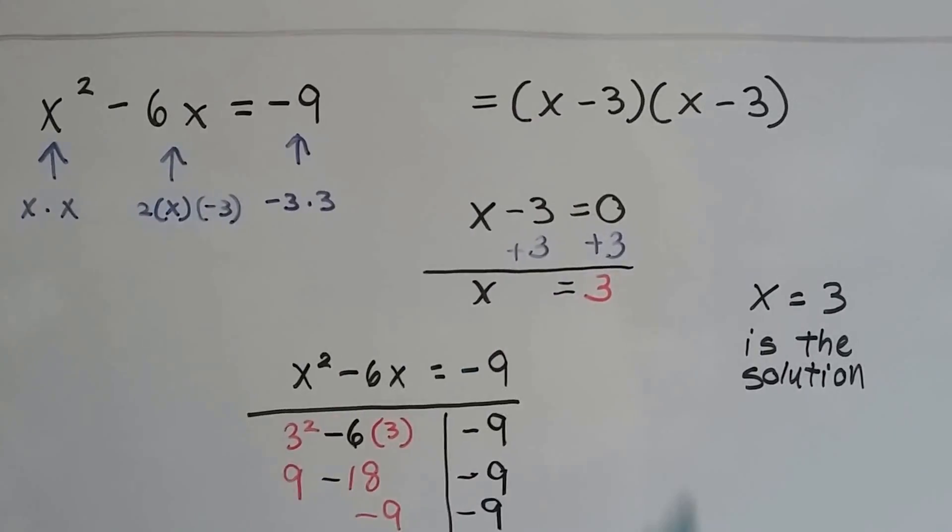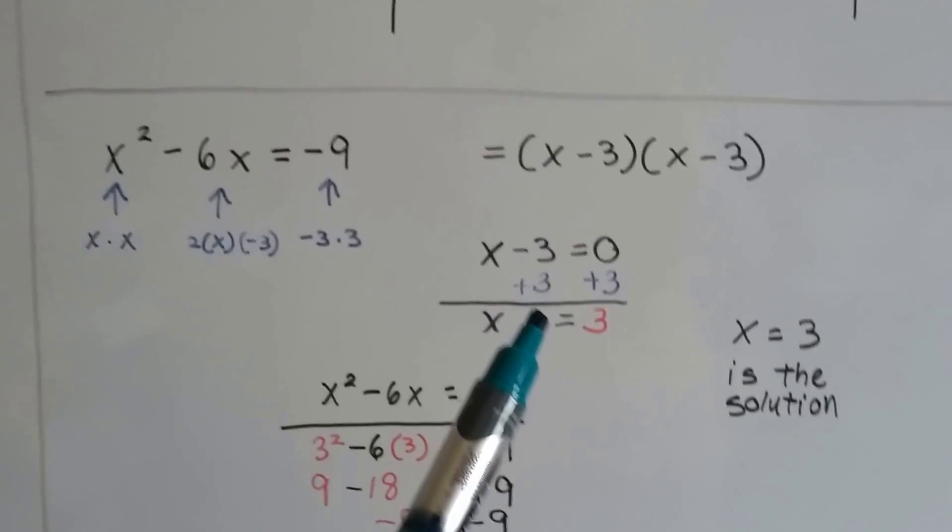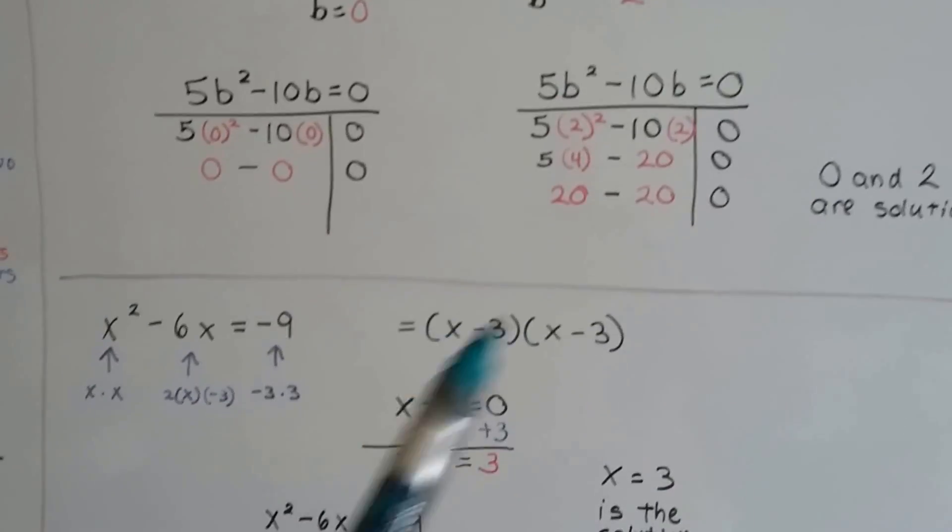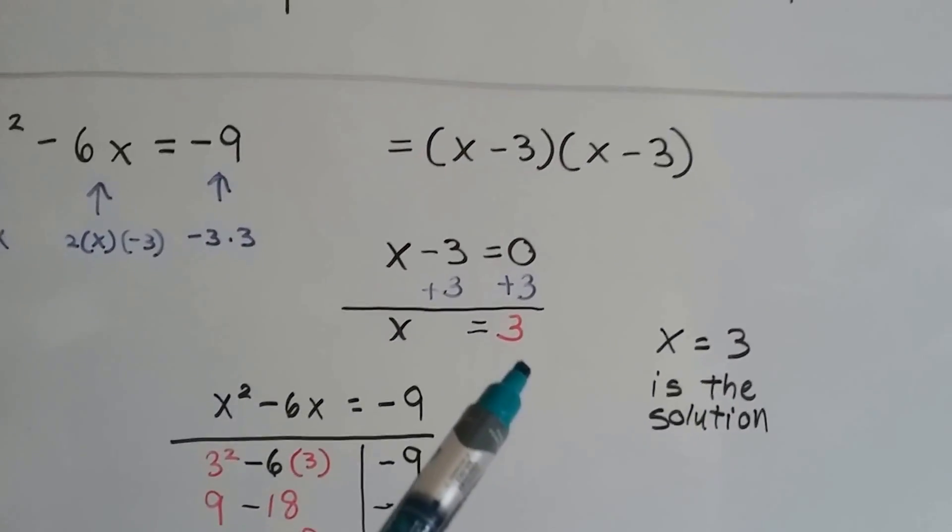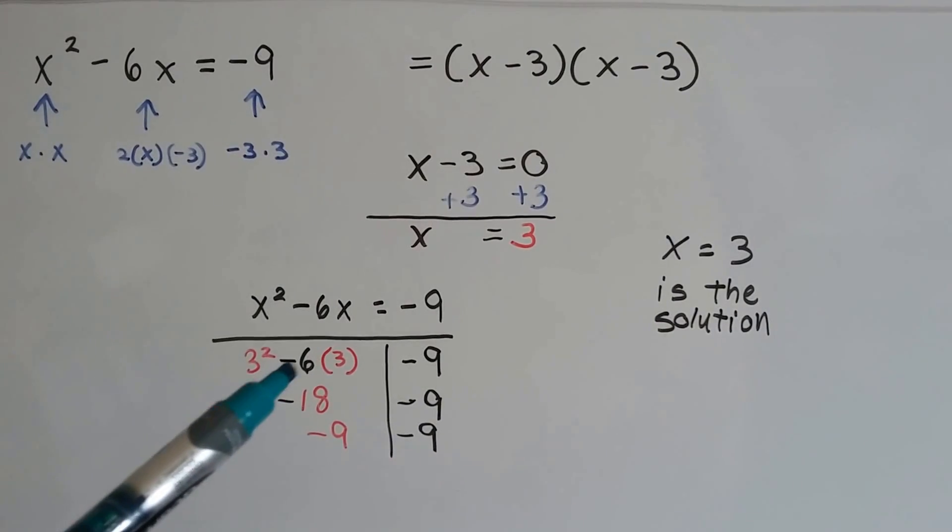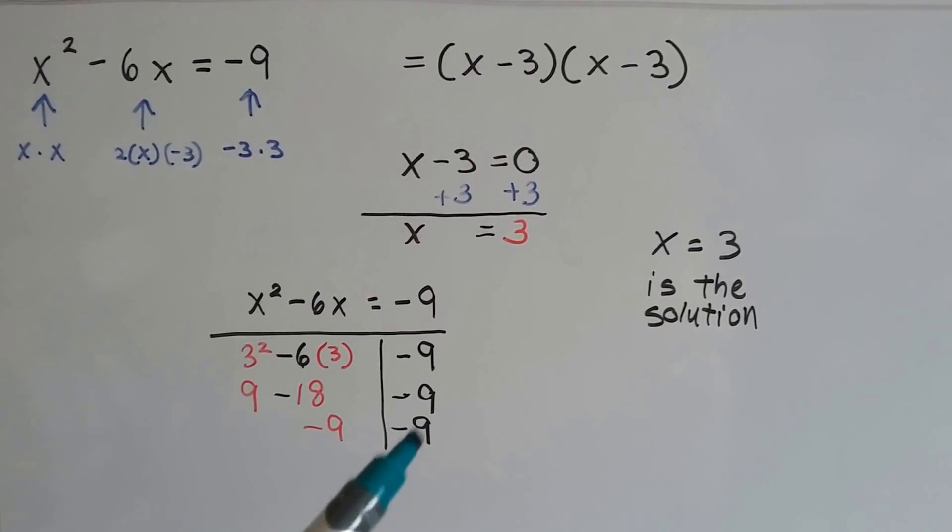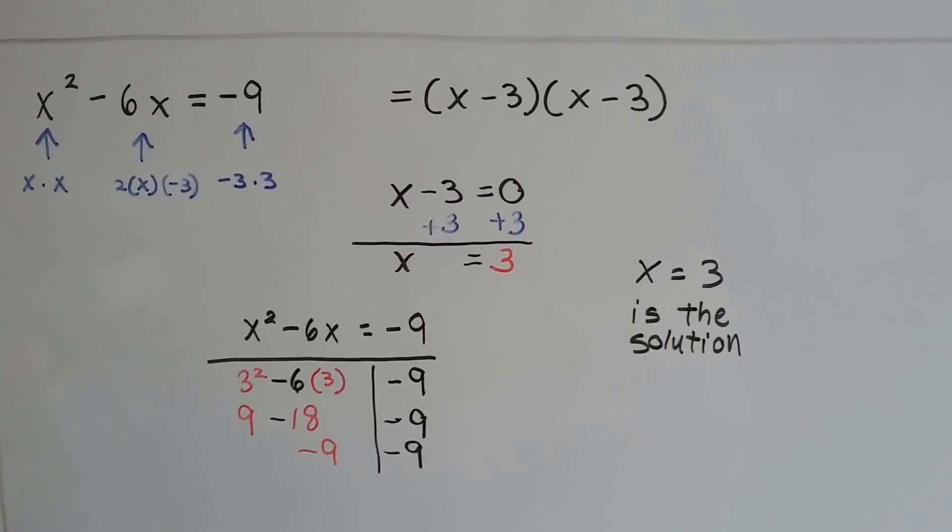That's going to give us our x and our x and our -3 and our -3. We only have to do it once because these are identical. We don't have to do this twice like I did up here with the or. They're both the same thing. So we find out that x = 3, and we plug it into the original equation. 3² - 6(3), and we find out that -9 = -9. It's true. So x = 3 is the solution.